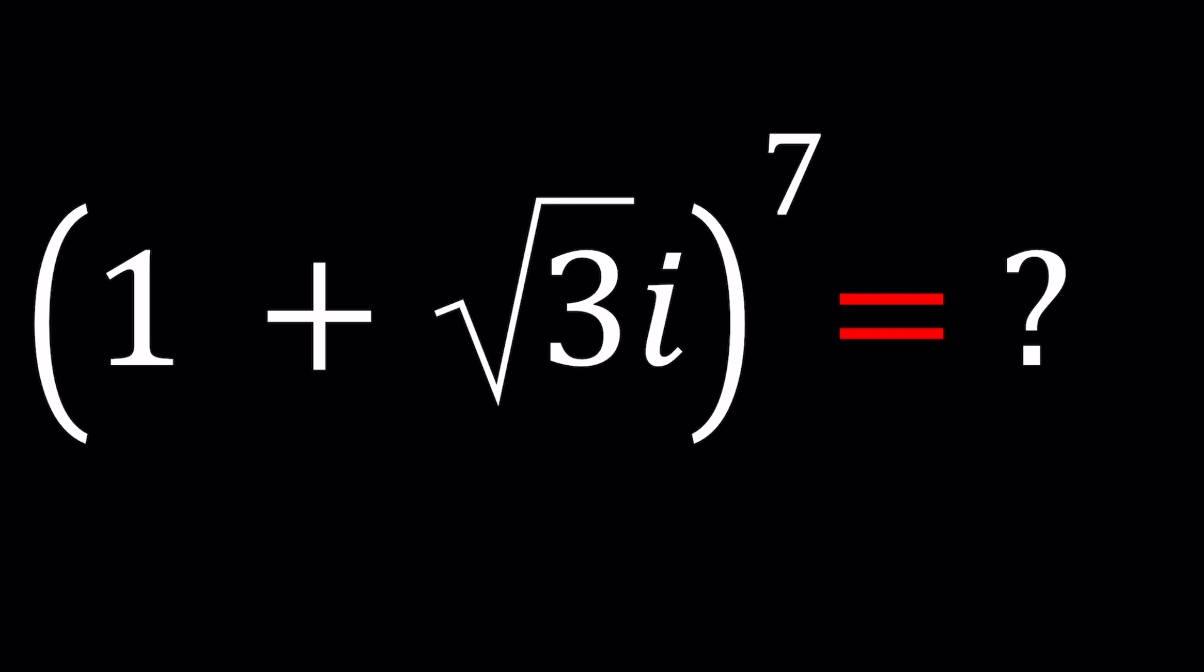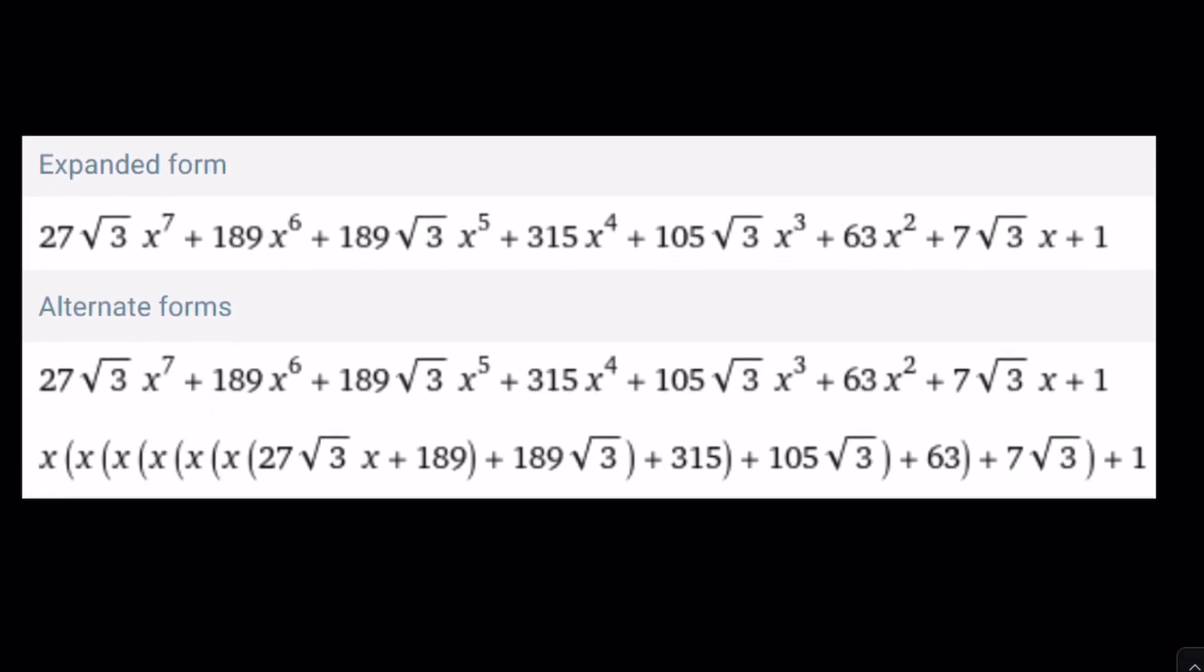So we have one plus square root of three I to the seventh power and I'll be presenting three methods even though the first method you'll see what I'm talking about. So when you see something like this, isn't it tempting to use the binomial theorem?